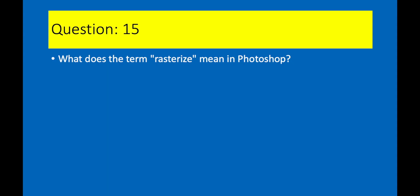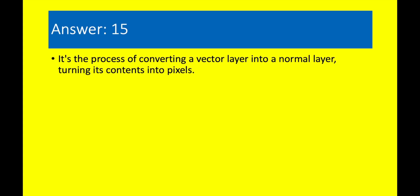Question 15. What does the term rasterize mean in Photoshop? Answer 15. It's the process of converting a vector layer into a normal layer, turning its contents into pixels.